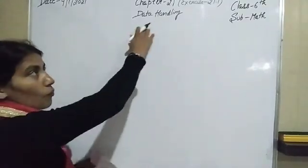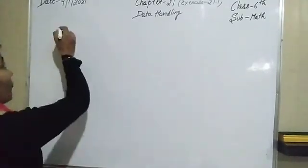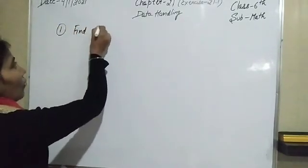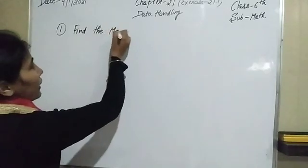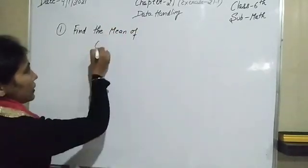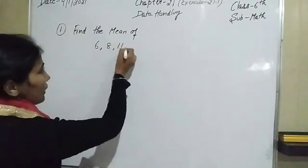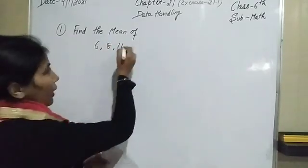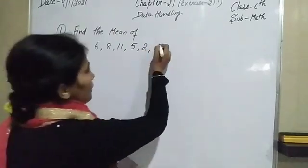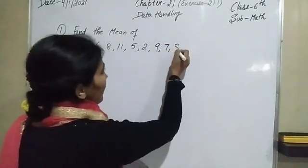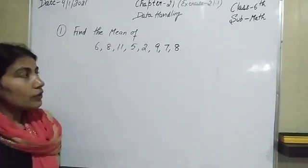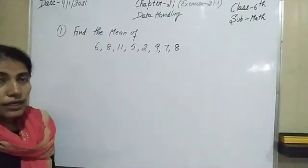Let's start the first question of the worksheet, that is 21.1. The first question says: find the mean of the following numbers — 6, 8, 11, 5, 2, 9, 7, and 8. So here the numbers are given and we have to calculate their mean.